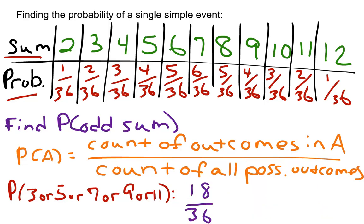The sum of all of my probabilities associated with odd sums turns out to be 18 over 36. That, of course, reduces to 1 half. So the probability of rolling an odd sum, if you roll a pair of dice, is 1 half, or 50%.